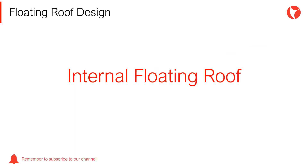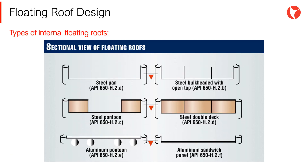Internal floating roofs are used inside fixed roof tanks to reduce gas emissions. Since this type of roof is not in direct contact with the atmosphere, its construction is much lighter compared to external floating roofs. The requirements for internal floating roofs are limited only by safety and durability factors. Allowed configurations and minimum requirements are included in Annex H of the API 650 code. There are different types of internal floating roofs as shown on the screen, going from bulk-headed type and steel pontoon type to aluminum sandwich type.